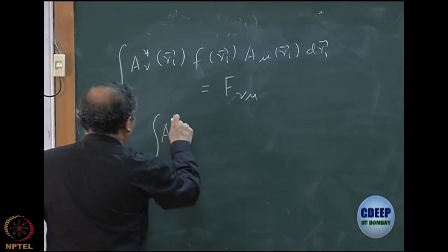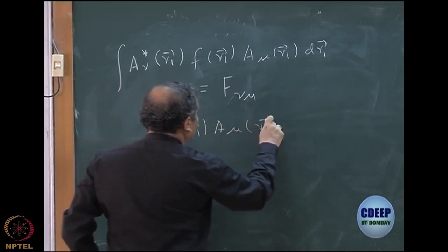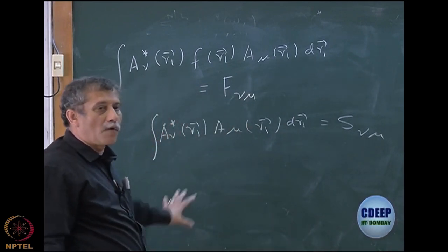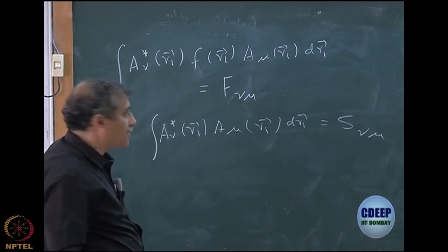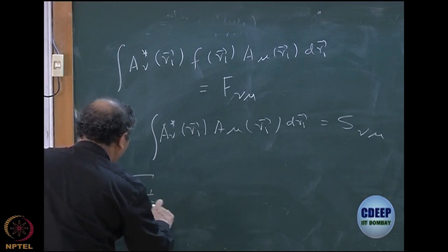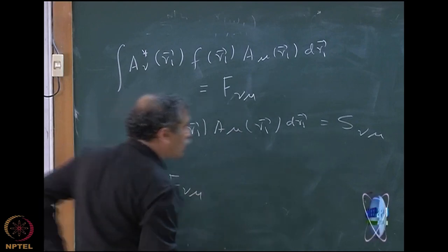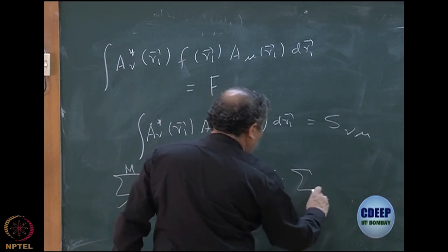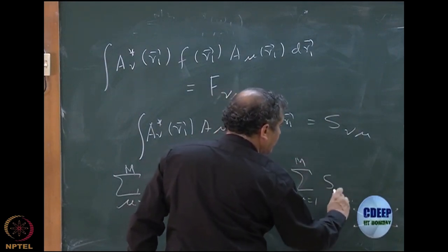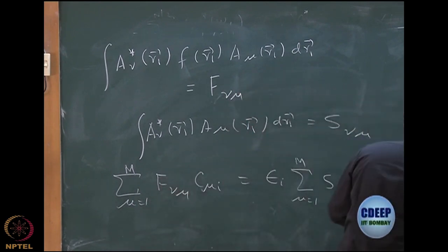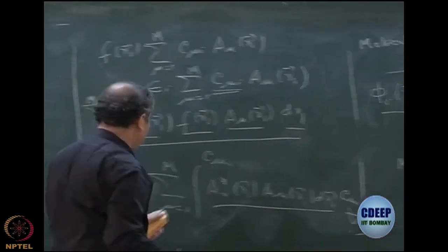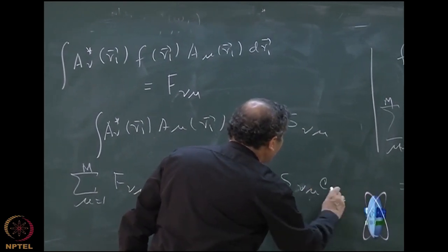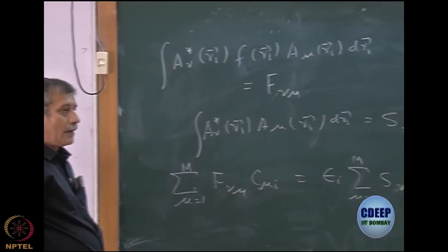Similarly, let me define A nu star R1, A mu R1, dR1 as a matrix of S nu mu. S is basically overlap matrix, overlap between two basis functions. If you do this, then your equation becomes sum over mu equal to 1 to M, F nu mu, C mu I equal to epsilon I sum over mu S nu mu C mu I. So C mu I should go inside the integration. So you have S nu mu C mu I.